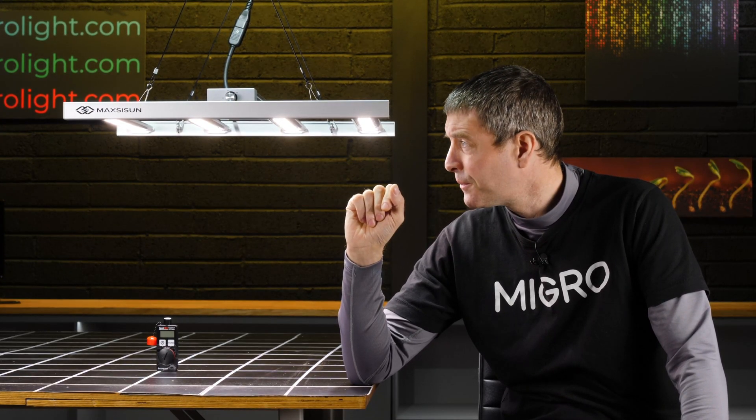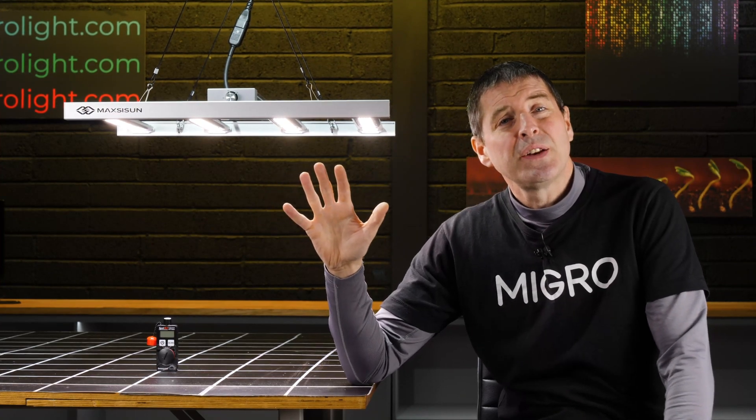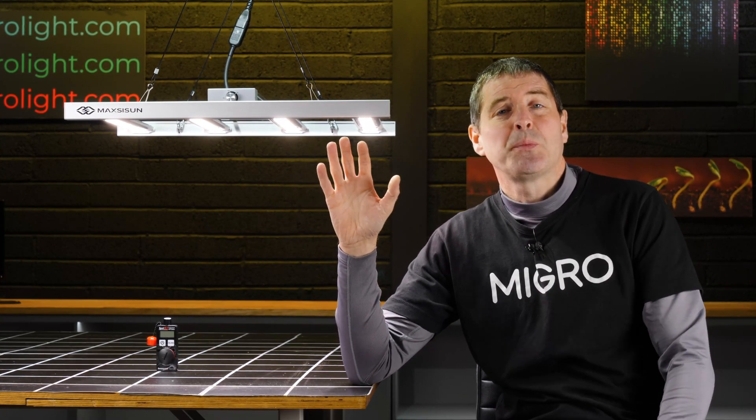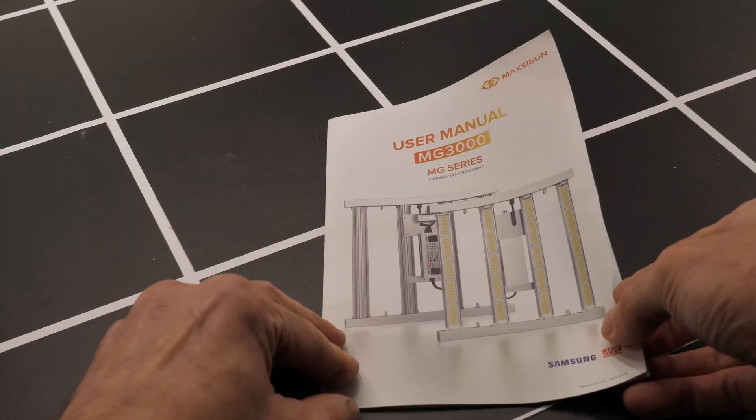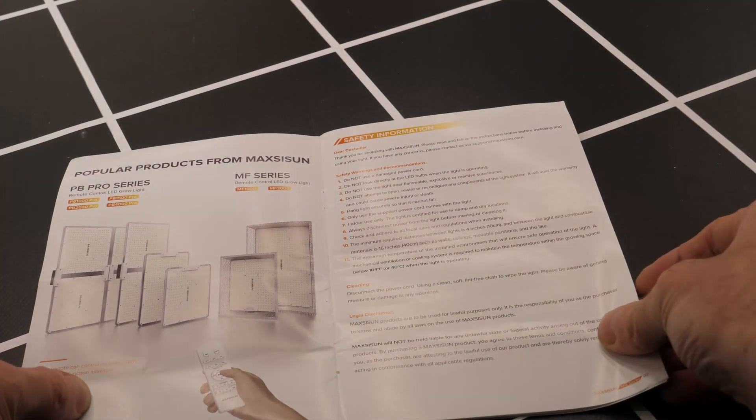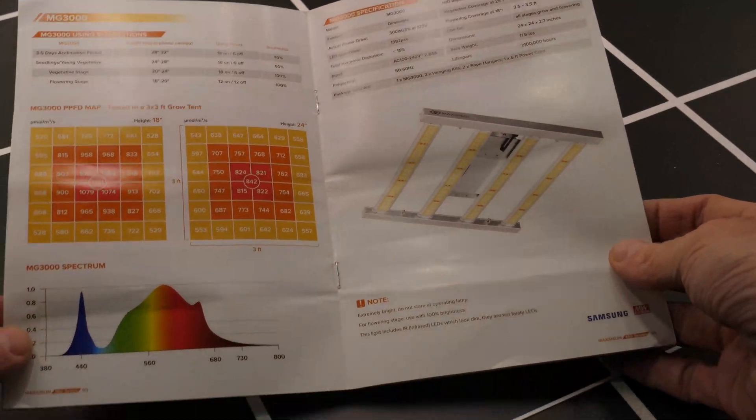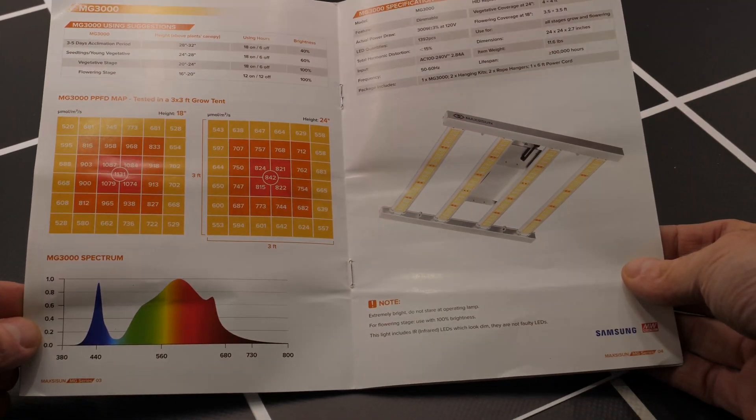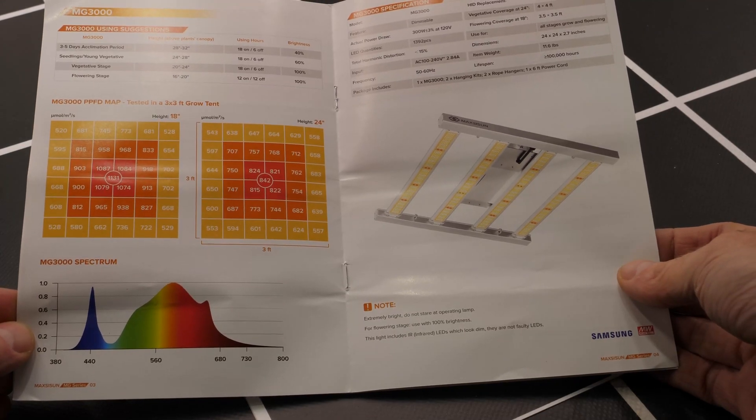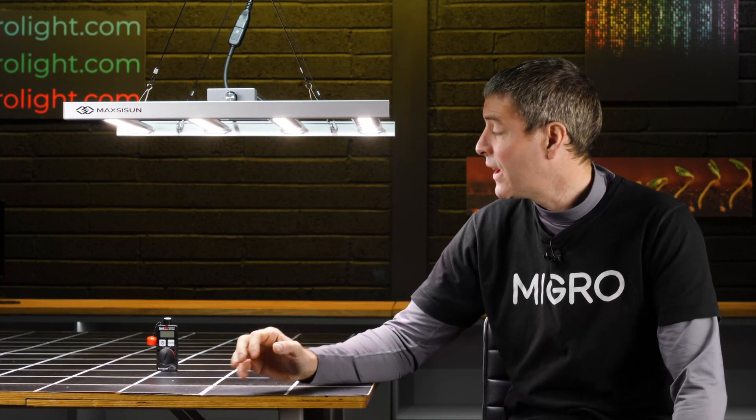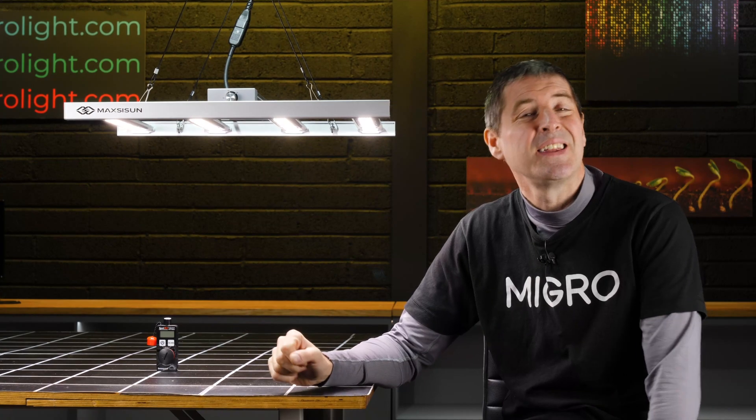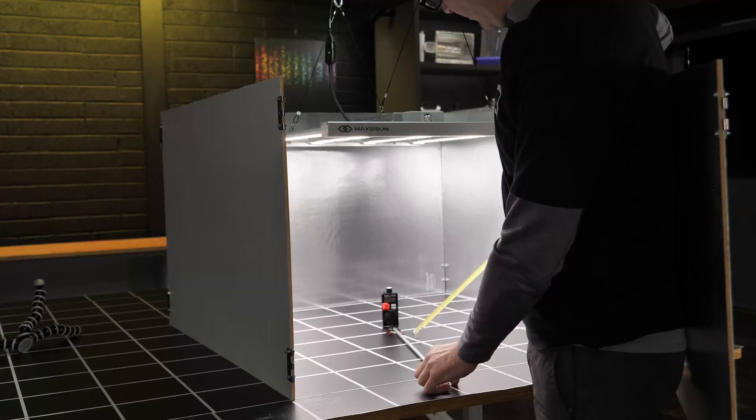So I set it up into the three foot by three foot area or 90 by 90 centimeter area, and again I was delighted to see that the instructions were perfect. It suggests the lowest hanging height of 16 inches or 40 centimeters in flowering, which I found that gave just around the thousand micromole average in the dead center which was excellent.